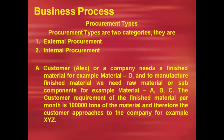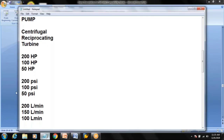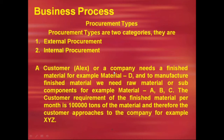Now discussing business process — this is very important. For any organization, the process remains the same as a basic fundamental. Procurement types are classified into two categories: external procurement and internal procurement. For example, a customer (Alex) or company needs a finished material D. The requirement is 100,000 tons per month — a huge business requirement. Material D is the result of raw materials or sub-components A, B, and C.